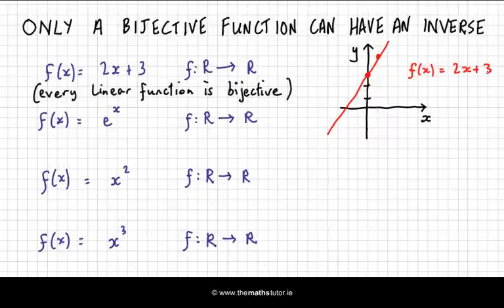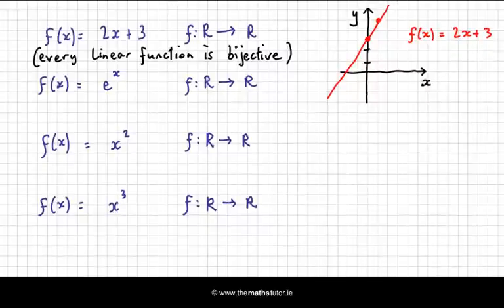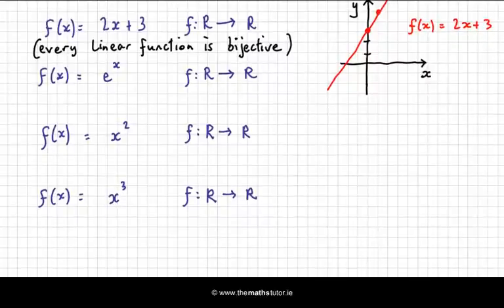Let's look at the next one now. We have f of x equal to e to the power of x. Now, e is a constant, so the variable is the power. When the variable is a power, we call it the exponential function. And when the base is positive,